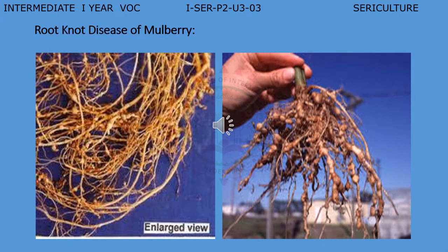Looking at the diagram of root knot disease in mulberry — one is the enlarged view and one is the short view. The disease is caused by the nematode Meloidogyne incognita. This disease is more prevalent in summer following rains. The degree of infestation is about 80% in various states. This parasite causes alteration in plant physiology. The affected plant shows stunted growth, marginal necrosis and yellowing of leaves. Underground symptoms are formation of characteristic knots or galls on the roots. Small knots indicate single infection and large ones indicate multiple infection. The parasite damages xylem and phloem tissues, resulting in disruption of water and food conduction.